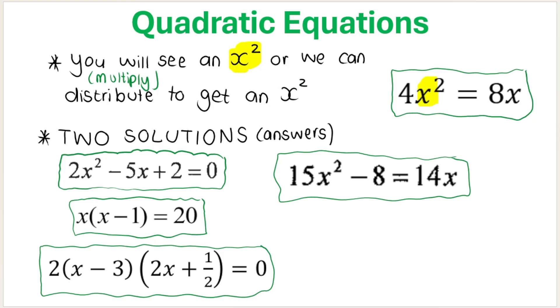So you can see here I've got an x squared, so it's quadratic. Same thing here and here. And in these equations down here, if I had to distribute this into the bracket, if I had to distribute the x into the brackets, you would get x squared minus x equals 20. So we can distribute to get an x squared. Therefore, it's a quadratic equation. Same thing over here. If I distribute, if I multiply, you will end up getting an x squared. So that's how we identify if it is a quadratic equation.